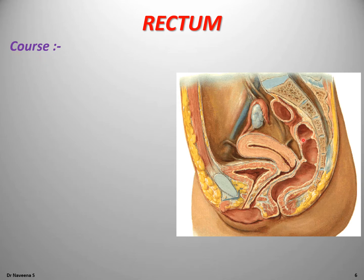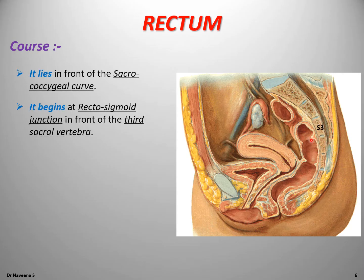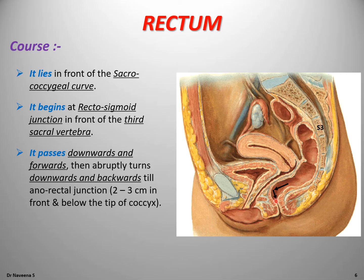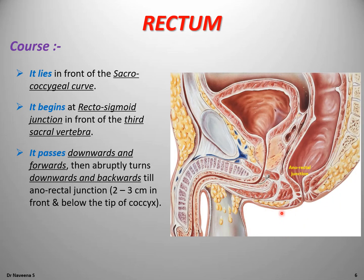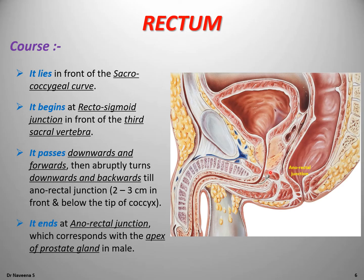The course of the rectum: the rectum lies in front of the sacrococcygeal curve. It begins at the rectosigmoid junction in front of the 3rd sacral vertebra. Below, at the tip of the coccyx, it passes downwards and forwards, then abruptly turns downwards and backwards till the anorectal junction, which lies 2 to 3 cm in front and below the tip of the coccyx. From there it continues below as the anal canal. In males, the anorectal junction corresponds with the apex of the prostate gland.